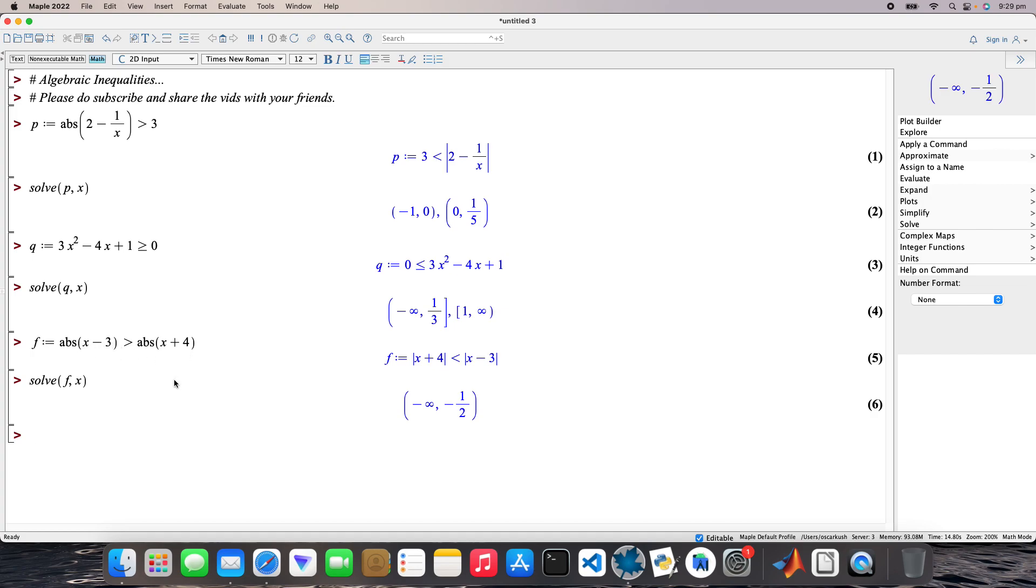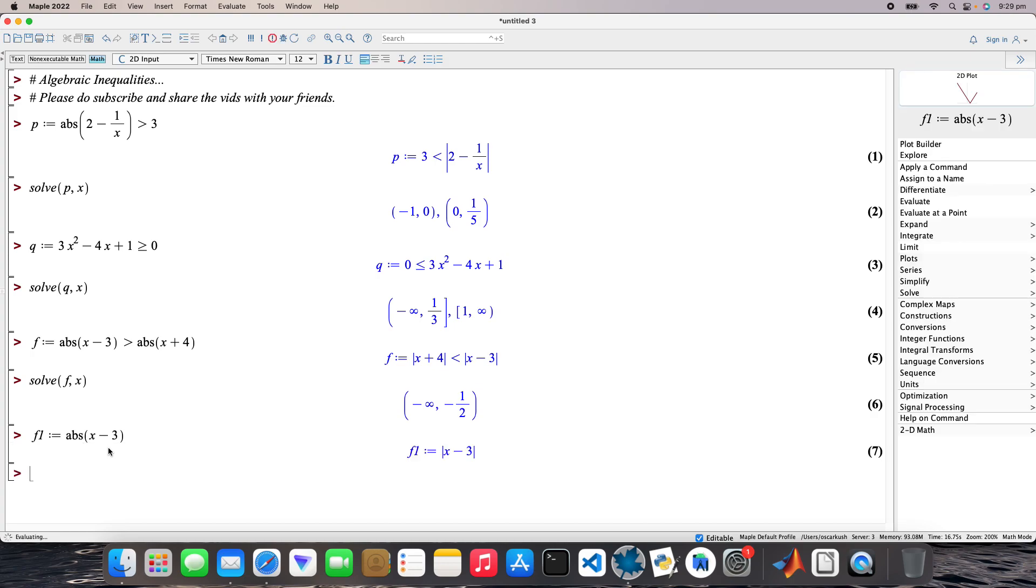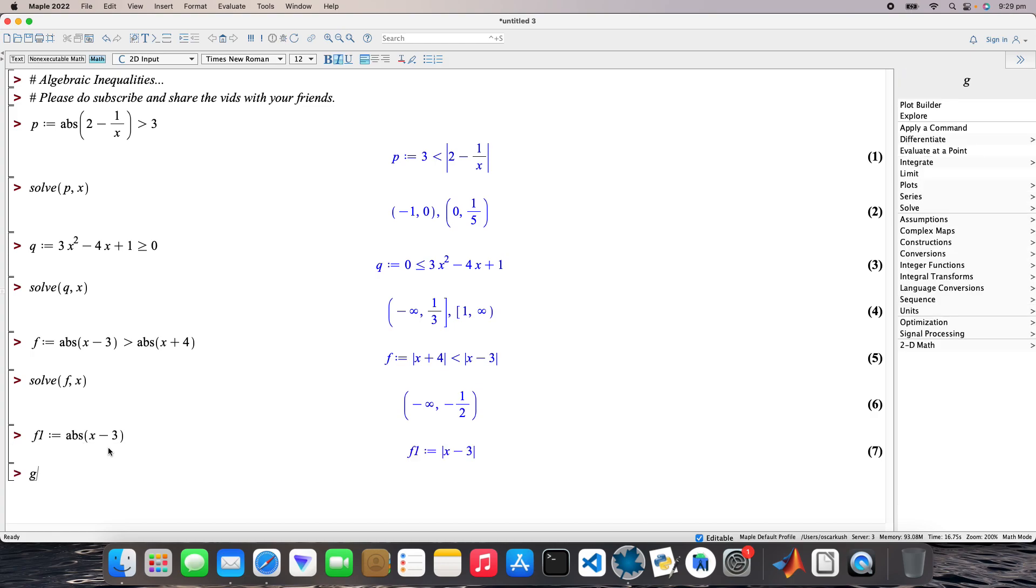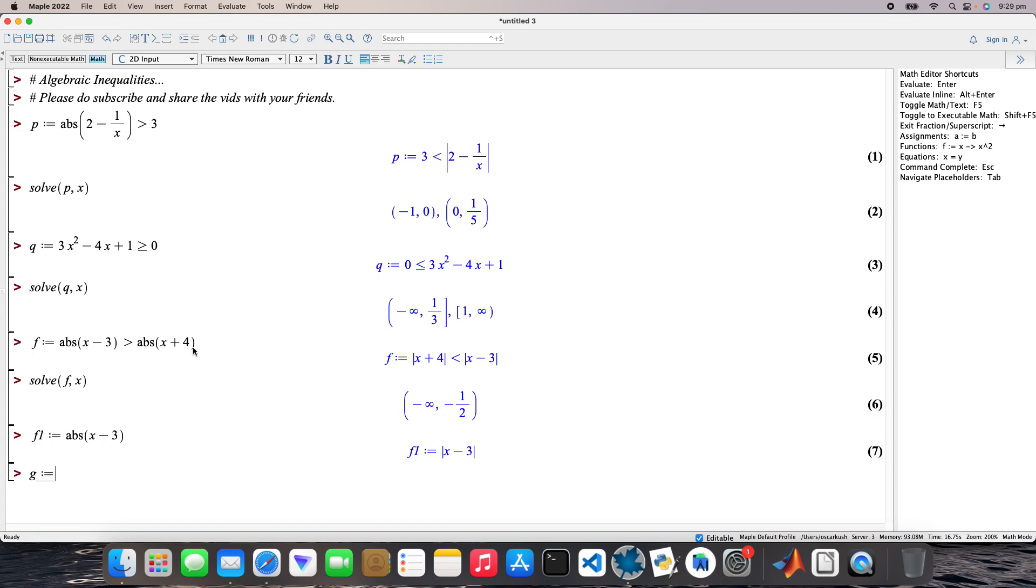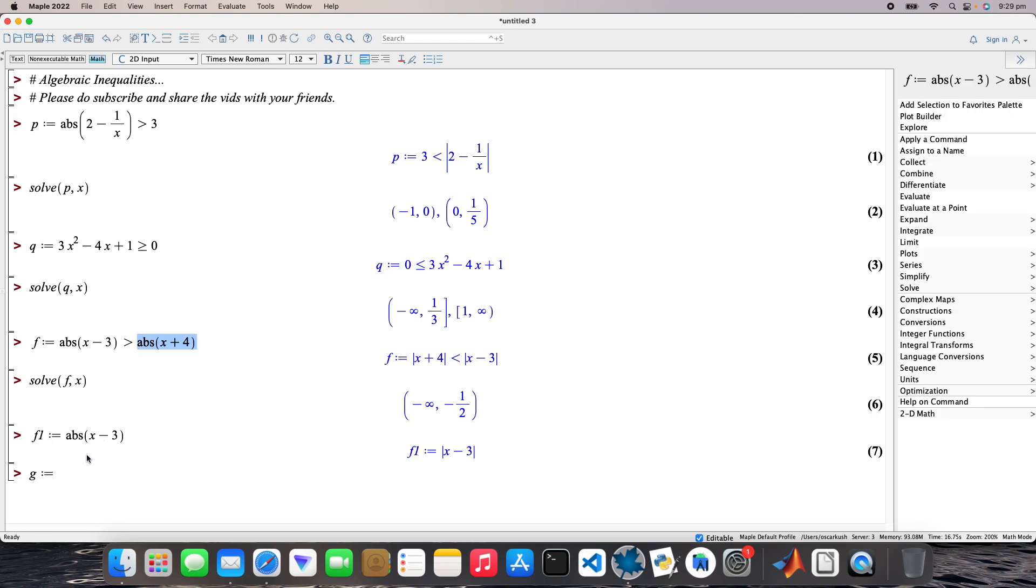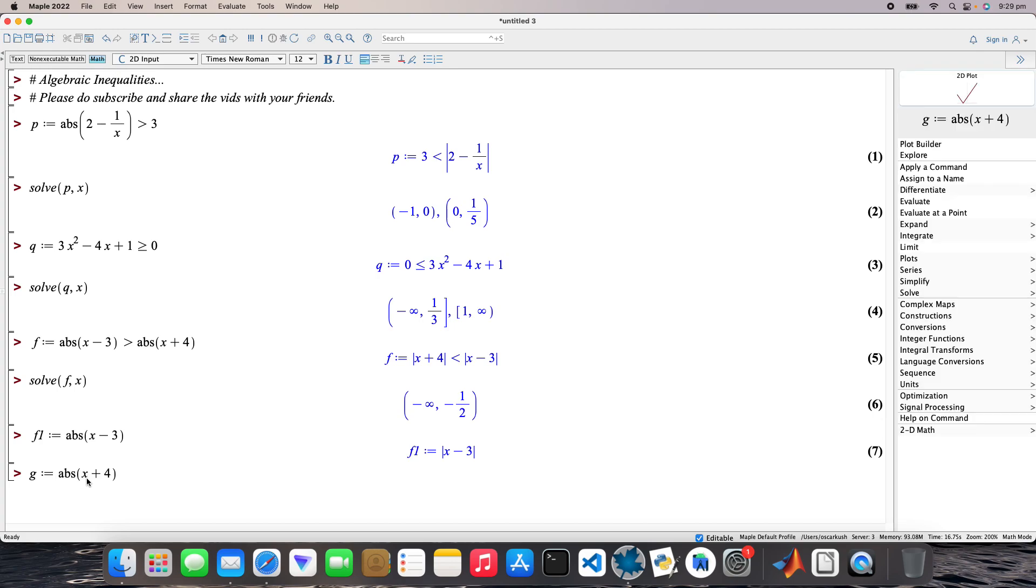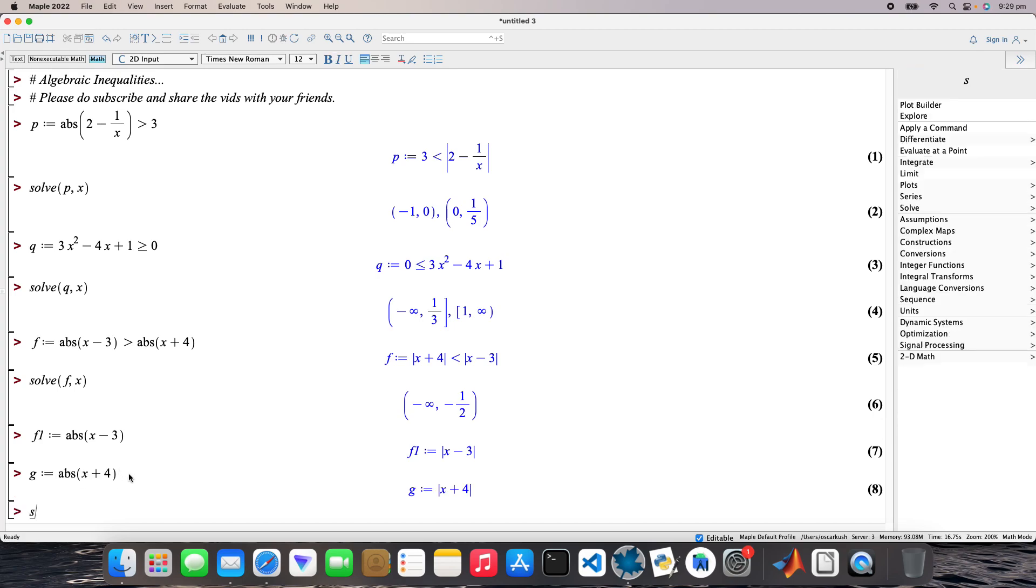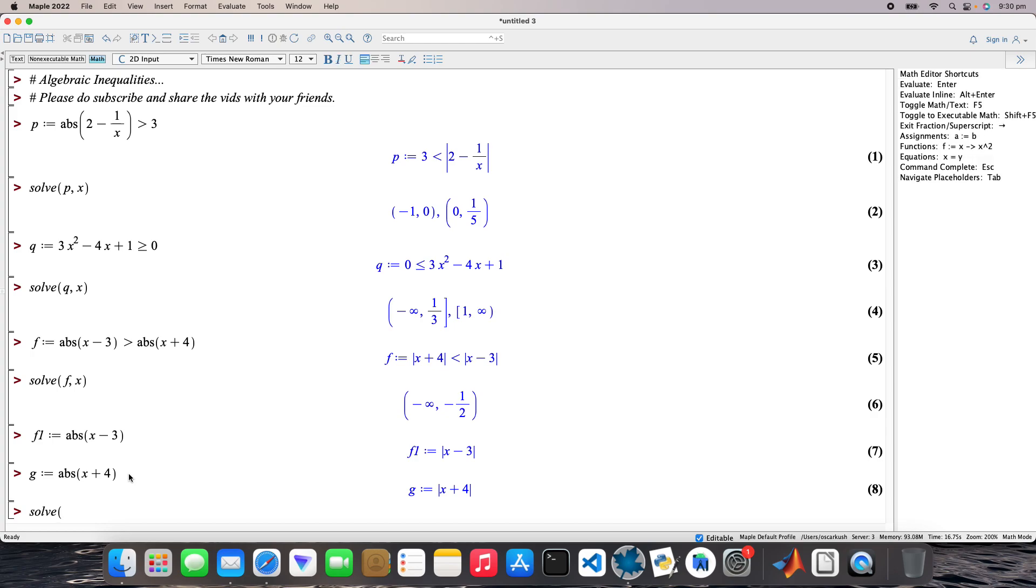I'll just break them apart, so I'll call that f1. That'll be absolute value of x minus 3. And the other one will be g, absolute value of x plus 4, just separate them. And then solve f1 greater than g for x.